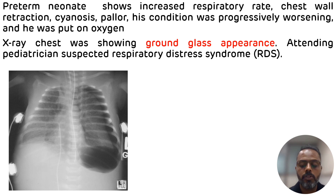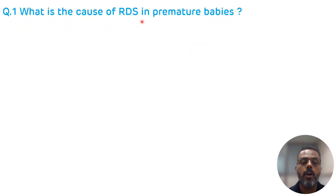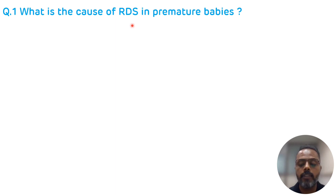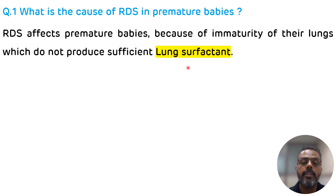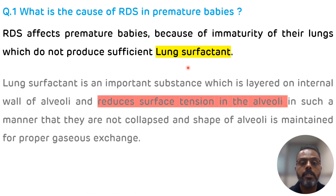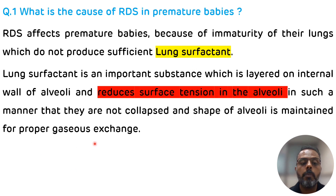The first question is: what is the cause of RDS in premature babies? RDS is one of the leading causes of neonatal morbidity and mortality among premature babies. Premature babies are more prone to RDS because their lungs are not mature enough to produce lung surfactant. Lung surfactant is a substance present on the internal wall of the lung alveoli that reduces surface tension, preventing alveolar collapse and maintaining shape for proper gaseous exchange.